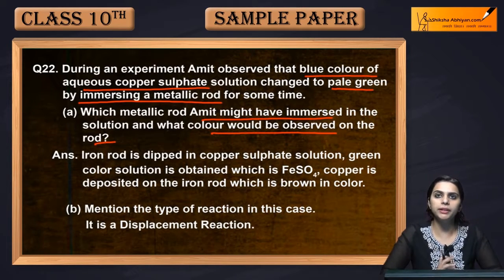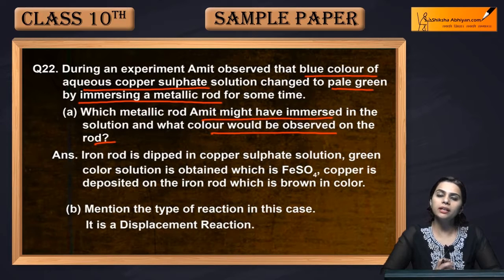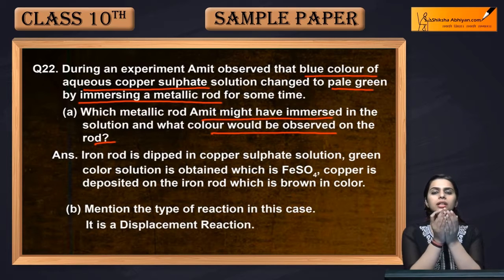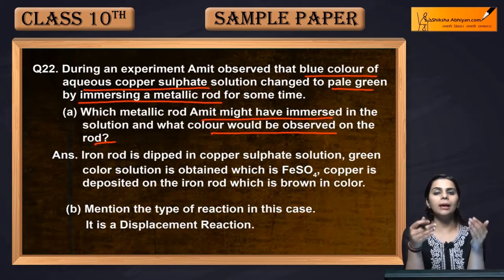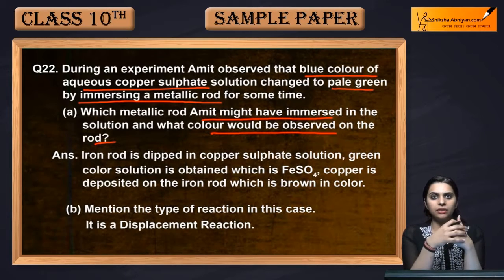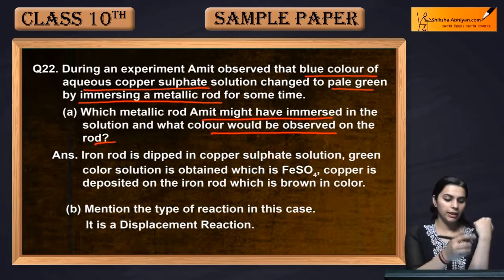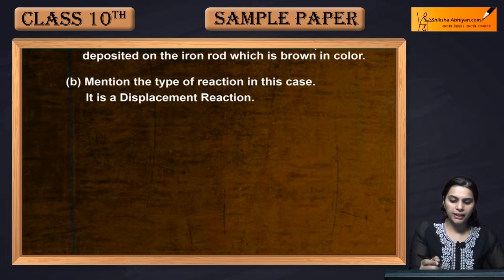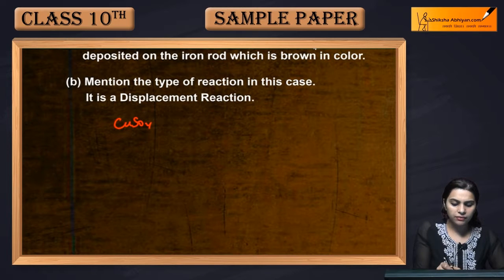An experiment was performed. A student took a copper sulphate solution and dipped a metallic rod. After that, the solution changed color. What color is copper sulphate? Copper sulphate is blue.